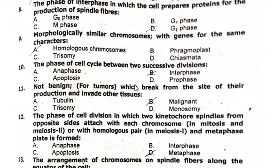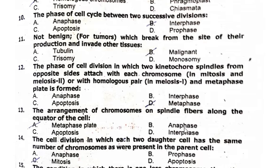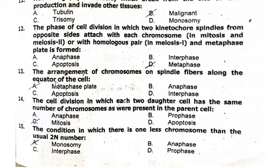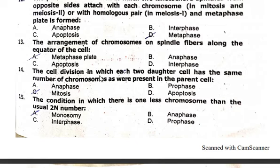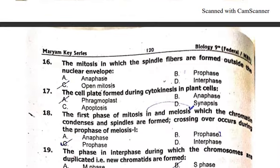The phase of cell cycle between successive divisions is interphase. Tumors which break from the site of their production and invade other tissue are malignant. The phase of cell division in which two kinetochore spindles form on opposite sides attached with each chromosome — in mitosis and meiosis II — or with homologous pairs in meiosis I, and the metaphase plate is formed, is metaphase. The arrangement of chromosomes on spindle fibers along the equator of the cell is the metaphase plate. The cell division in which two daughter cells have the same number of chromosomes as the parent cell is mitosis. The condition in which there is one less chromosome than the usual 2n number is monosomy. The mitosis in which spindle fibers are formed outside the nuclear envelope is open mitosis.